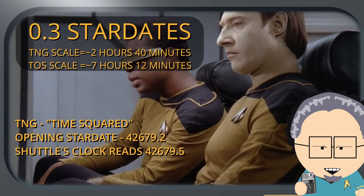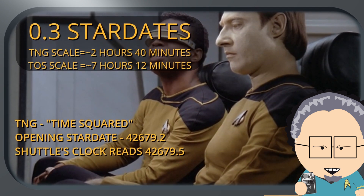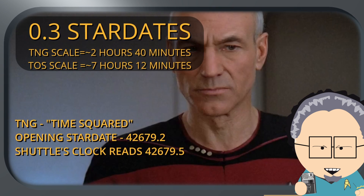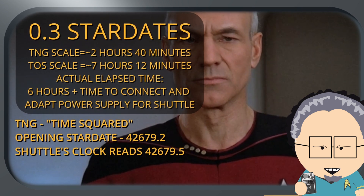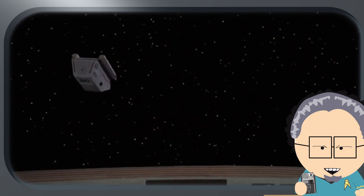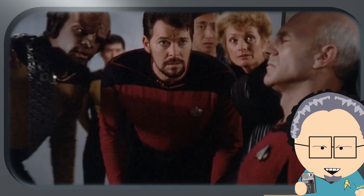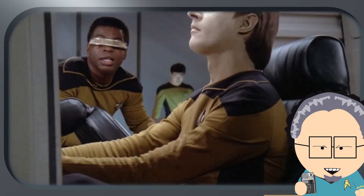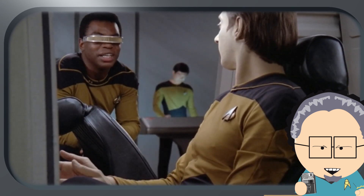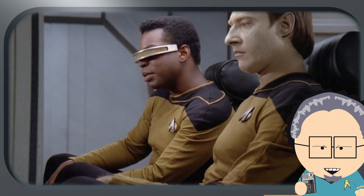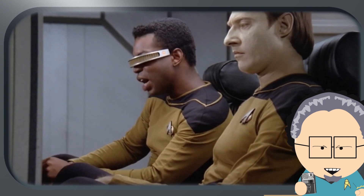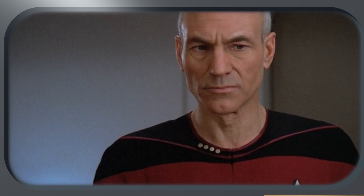Geordi reports: 'We've been able to reactivate the shuttle and the onboard clock indicates that the shuttle is six hours in front of us.' So there you have it. Picard enters his initial log at stardate 42679.2, they detect the shuttle, bring it aboard, Data and Geordi spend time hooking up the power — about an hour and 12 minutes of work — and then Geordi discovers the shuttle's clock is six hours ahead. That's squarely in the TOS range, not the TNG range.